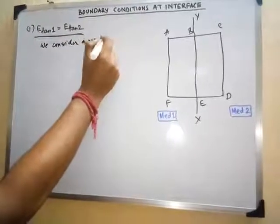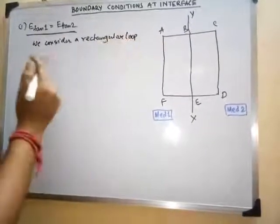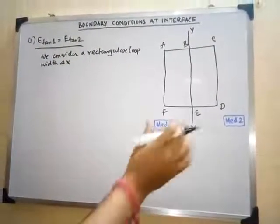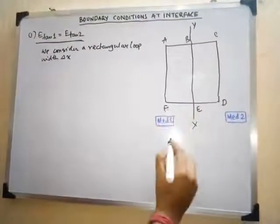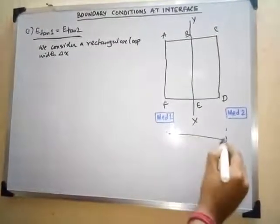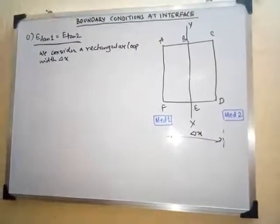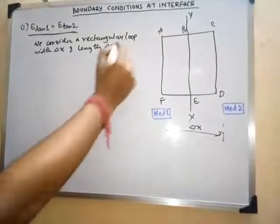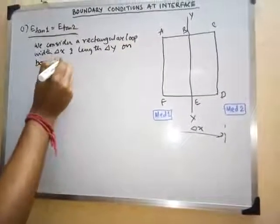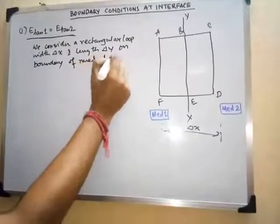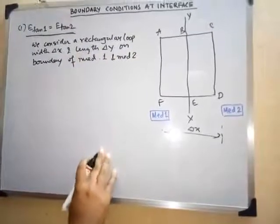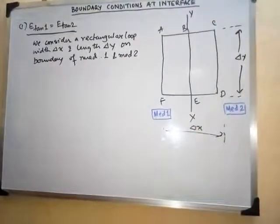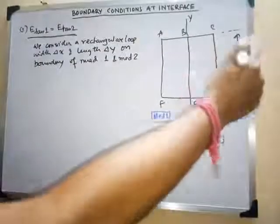We consider a rectangular loop. The width of the rectangular loop is del_x — that is, from F to D, this total distance is del_x. Also, the length is del_y, taken on the boundary of medium 1 and medium 2. So del_y is this length shown in the figure. We are considering width del_x and length del_y.